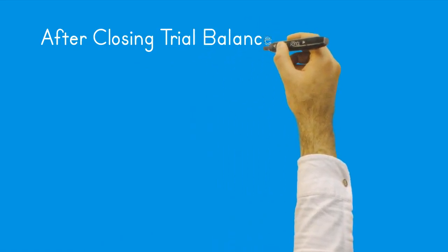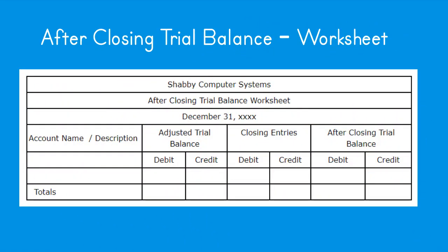After-closing trial balance worksheet. The heading area contains the company name, title, and period ending date. Columns include: account name/number; an adjusted trial balance column (amounts taken from the adjusted trial balance worksheet); a closing entries column (debits and credits needed to zero out revenue and expense accounts); and an after-closing trial balance column, calculated by taking the adjusted trial balance balance and adding or subtracting the closing entry adjustments.